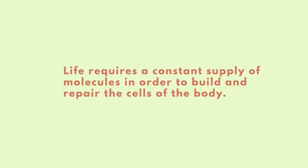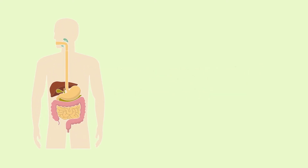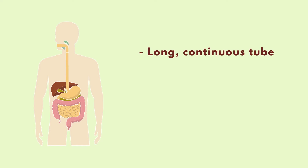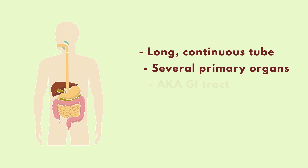Most molecules enter the body through the digestive system in the form of food. The digestive system is a long, continuous muscular tube consisting of several primary organs. This tube of collective organs is also known as the gastrointestinal tract, here and now referred to as the GI tract.